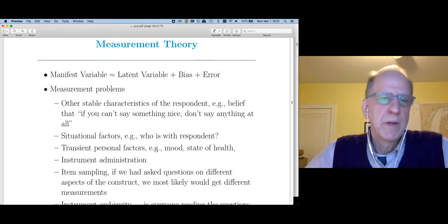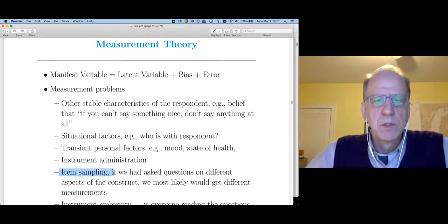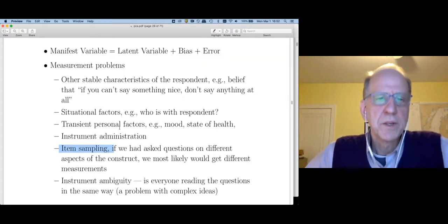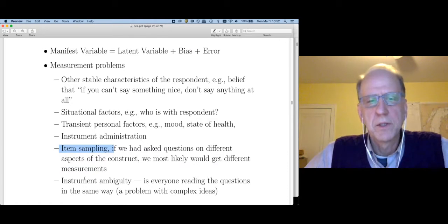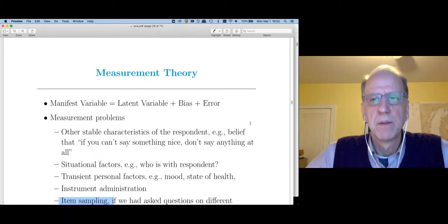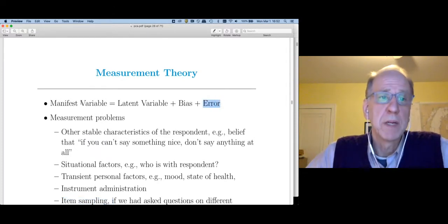There could be transient personal factors. So if you ask me some questions when I'm tired, hungry and grumpy, my responses may be different than if you ask me the same question after I've had a nice meal and a good night's sleep and probably a cup of coffee. So instrument administration could also create a bias. To give you an example of error, there's item sampling. So if I'd asked you a different set of math problems, you'd probably get a slightly different answer on the test. That's an example of random error, assuming that all my math questions are from the construct domain that I'm trying to measure. Another example of error is what's called instrument ambiguity. So different people could be reading the questions in different ways. And if that's a problem, then that's just going to add error to your measures.